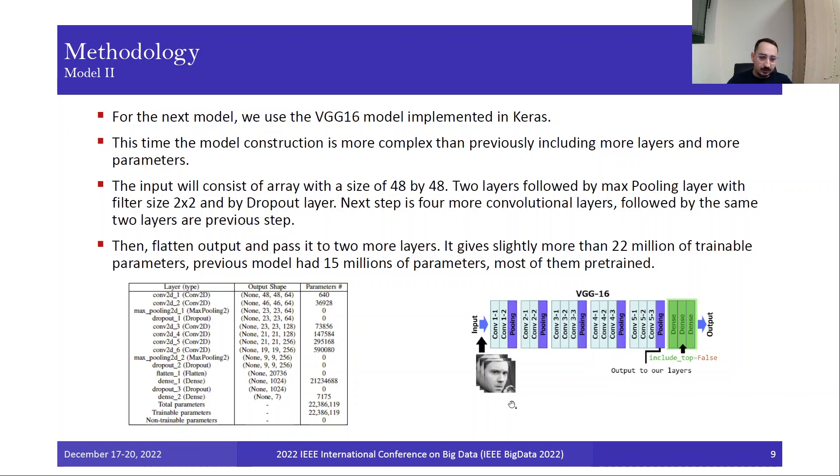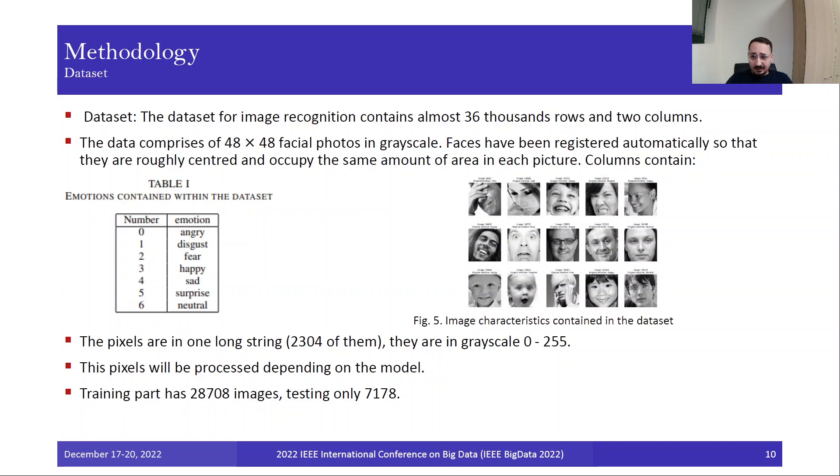Here we have the architecture of the model, so we have convolution 1, convolution 2, pooling, next we have two layers, pooling, three layers, pooling, and so on. And then we have the output here.